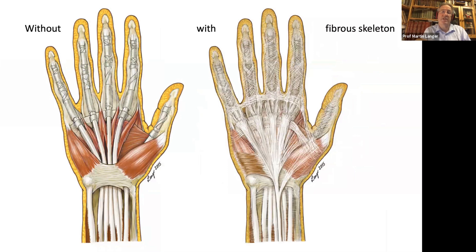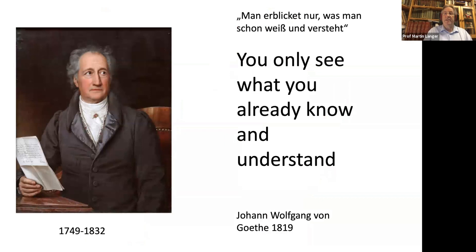So it's very difficult to understand. And if you see it in an operating theater or in anatomy, you only know the anatomy without the fibrous skeleton, and it seems to be an irregular system of fibers that is difficult to comprehend. The anatomy has little interest in providing a detailed description of it, and you can't find one. Here is a citation from Johann Wolfgang von Goethe from 1819, 200 years ago: 'You only see what you already know and understand.'